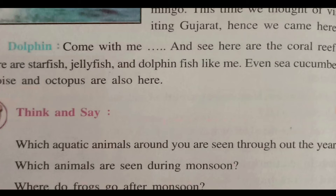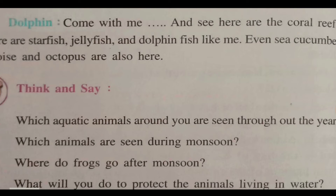Coral reef means a place where there are different types of aquatic plants and water life nearby. There are starfish, jellyfish, dolphin, and many different types of fish. Even sea cucumber, tortoise, and octopus are also found there.